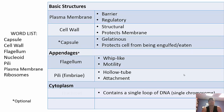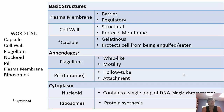The plasma membrane is a regulatory barrier between internal and external environments. The cell wall is structural and protects the membrane. The capsule, when present, protects the cell from being engulfed. Flagella provide motility. Pili are hollow tubes used for attachment. The nucleoid region contains a single loop of circular DNA, and ribosomes carry out protein synthesis.